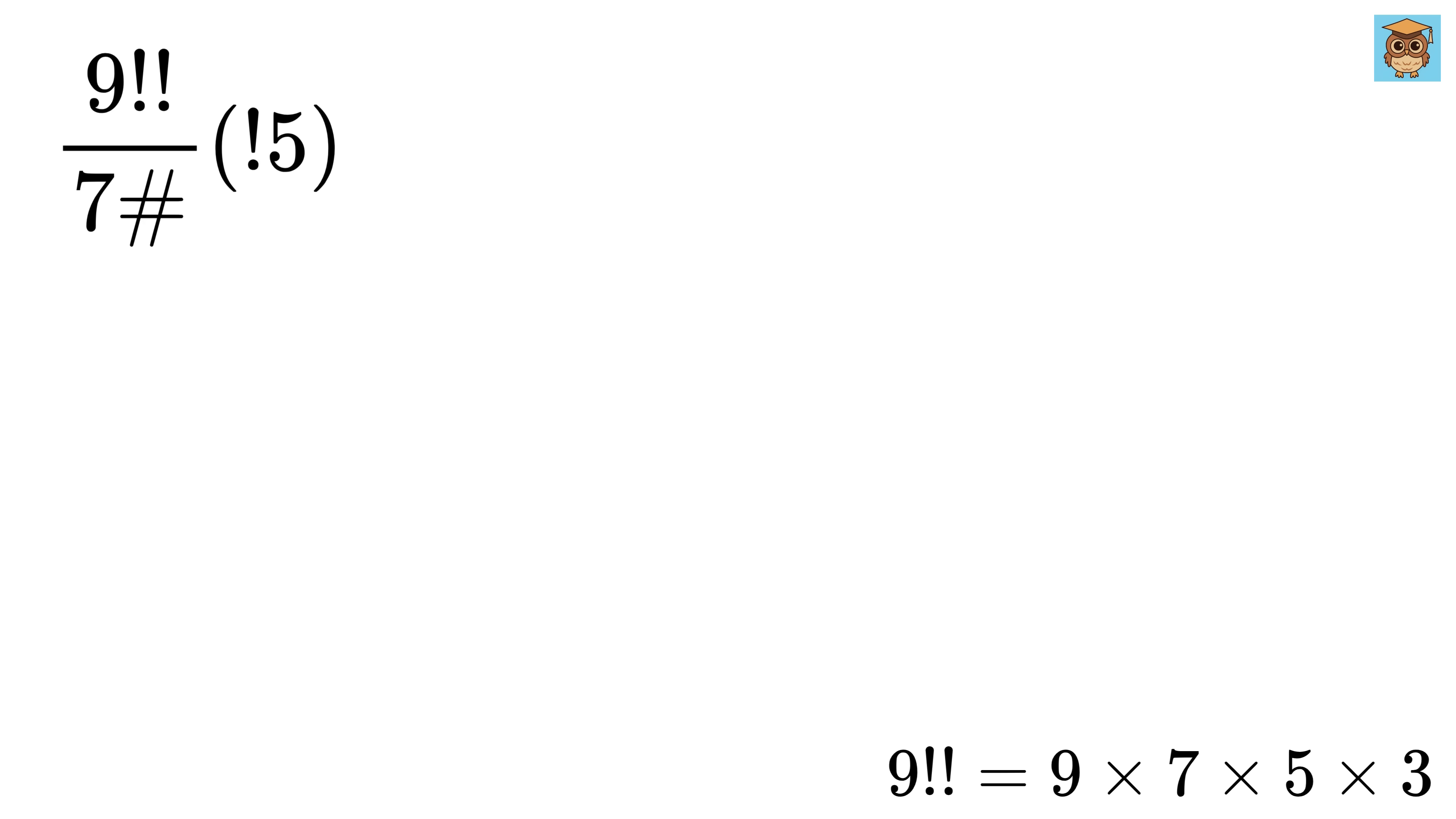Now, just to let you know, in the case of an even number, a double factorial will simply be equal to the product of all even numbers down to 1 like 8. Double factorial equals 8 times 6 times 4 times 2.